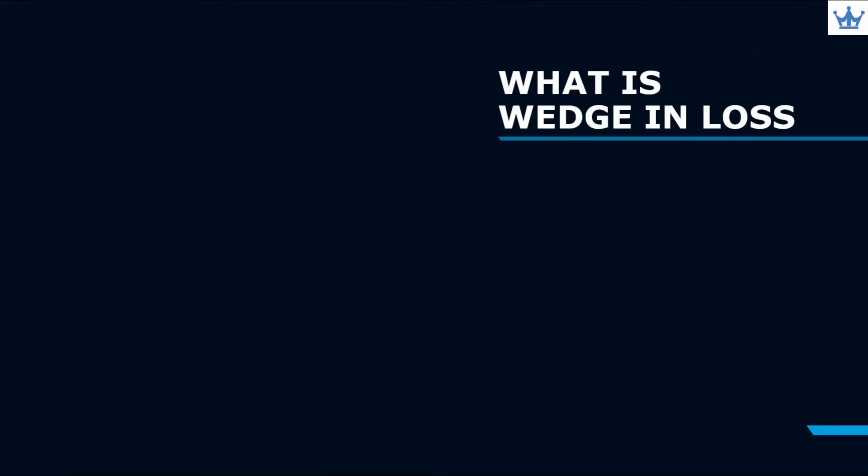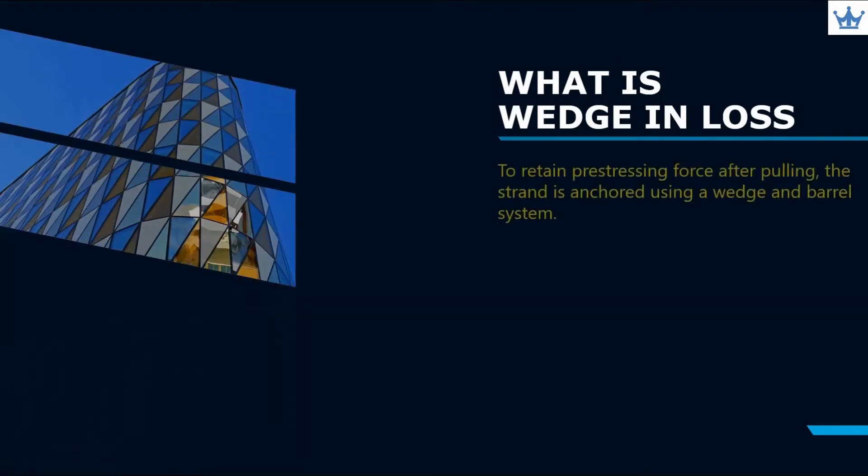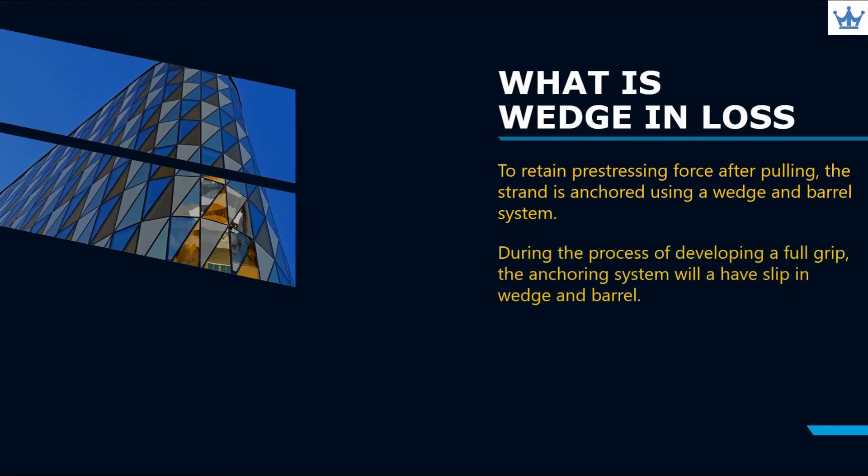What is wedge-in loss? To retain pre-stressing force after pulling, the strand is anchored using a wedge and barrel system. During the process of developing a full grip on the strand, the anchoring system will have a slip in wedge and barrel.